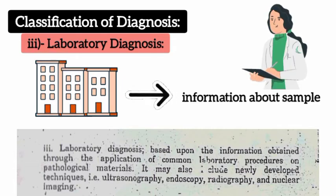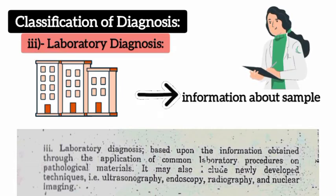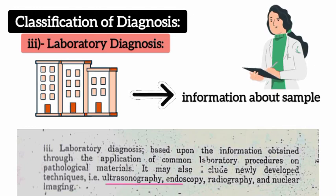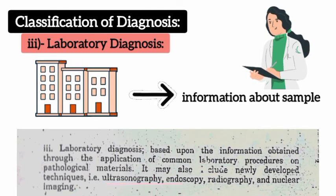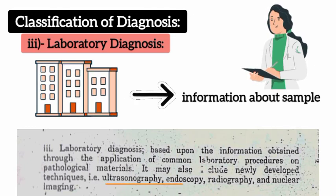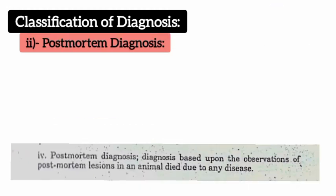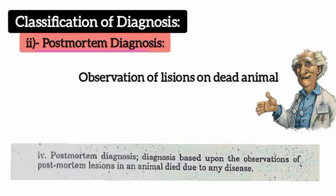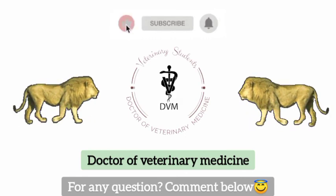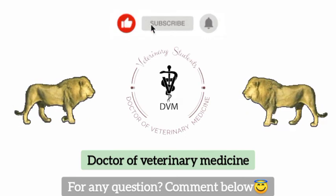Laboratory diagnosis includes many newly developed techniques like ultrasonography, endoscopy, and radiography. The fourth class is post-mortem diagnosis, which is based on observations of a dead animal due to any disease. Thank you — for any questions, comment below.